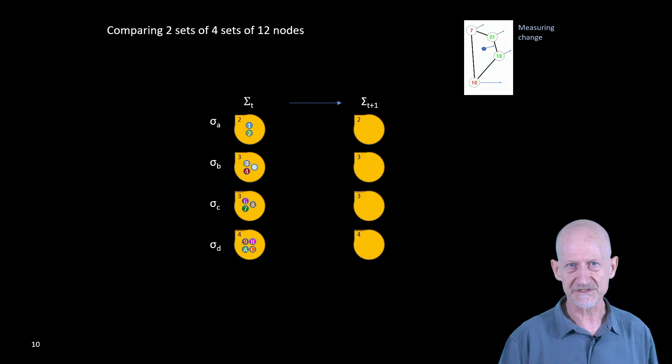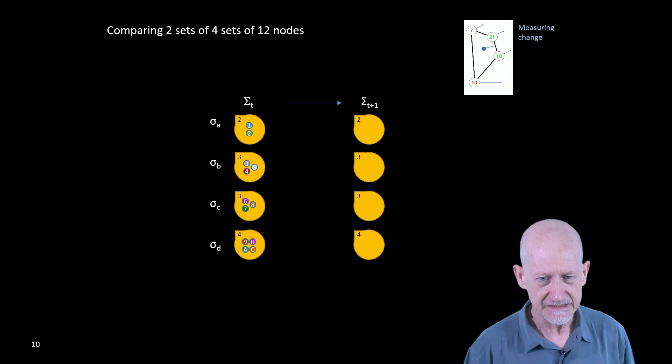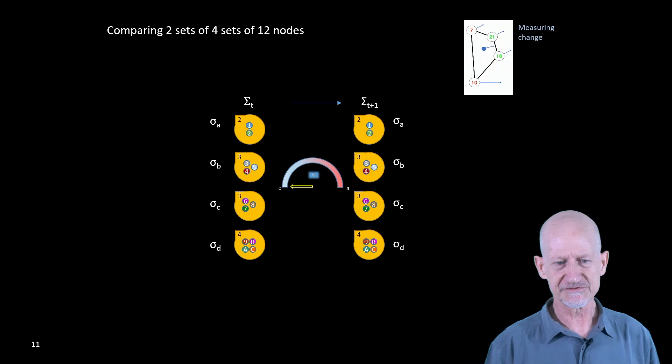Let me give you this simple example. Imagine we have twelve players clustered in four simplices. So simplices sigma a, sigma b, sigma c and sigma d. At time t plus one, we observe no changes, so the simplices keep being exactly the same.